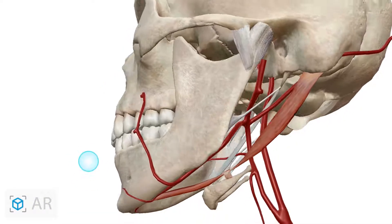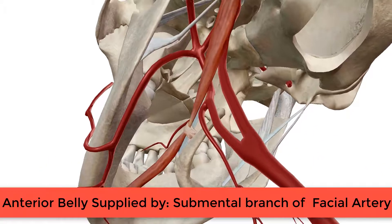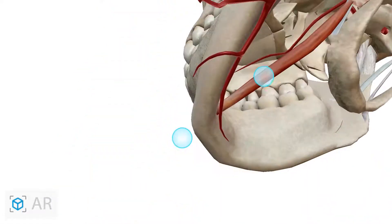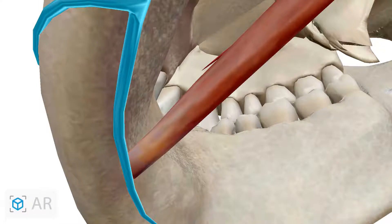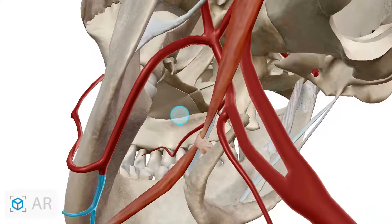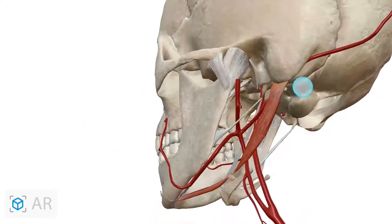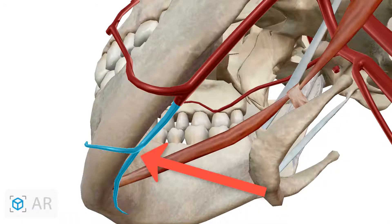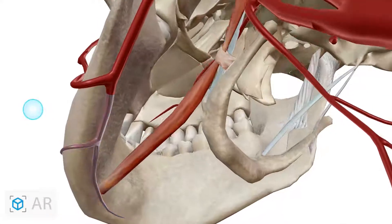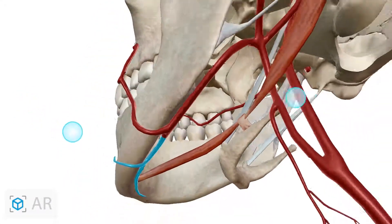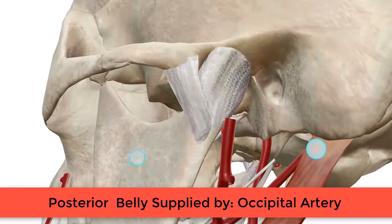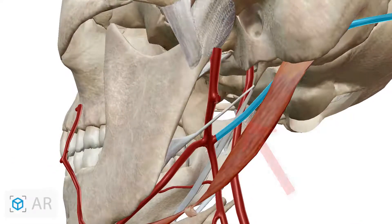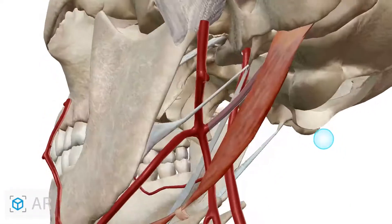For the blood supply of the digastric muscle, the anterior belly is supplied by the submental branch of the facial artery — here is the submental branch of the facial artery. The posterior belly is supplied by the occipital artery.